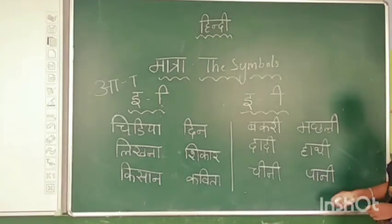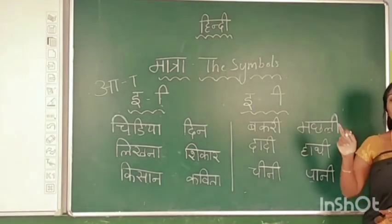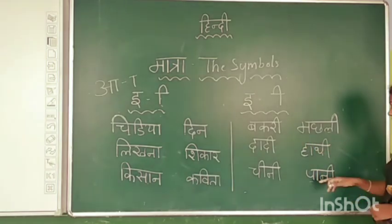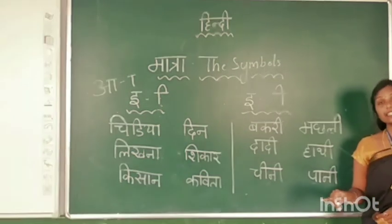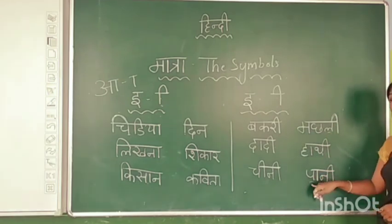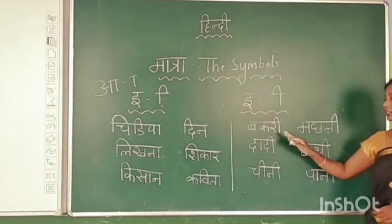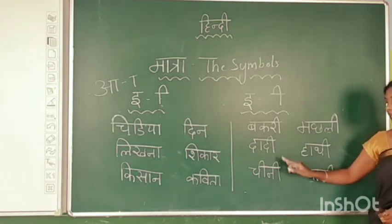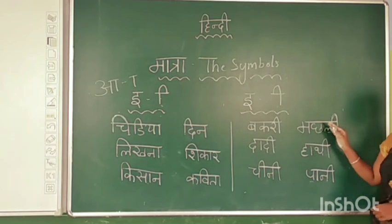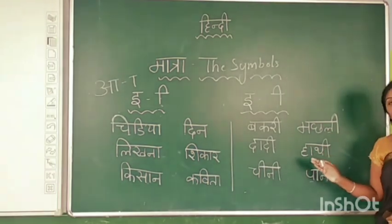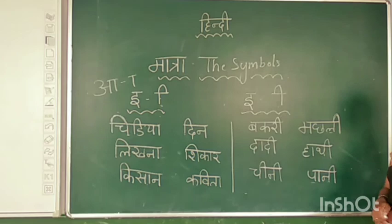And the next word: the first letter is Pa — I join the symbol of A giving Pa. Next is Na — with the symbol of EE joined, Na gives Ni. Pa + Ni = Paani. So to recap: Bakkari (goat), Dadi (grandmother), Chini (sugar), Machali (fish), Haathi (elephant), Paani (water).